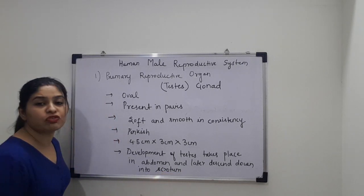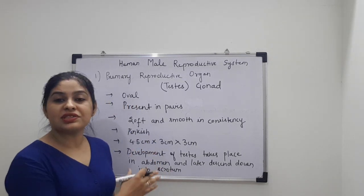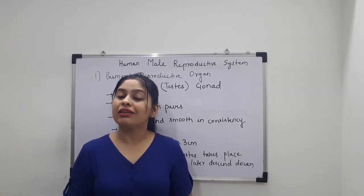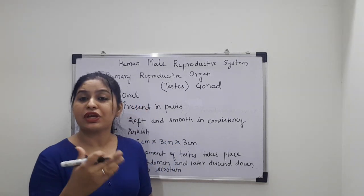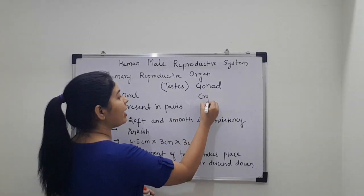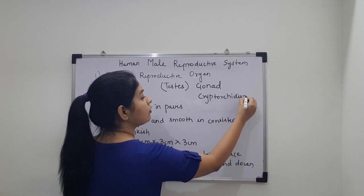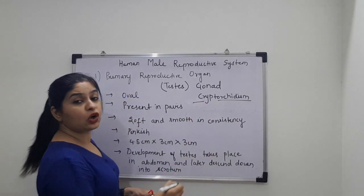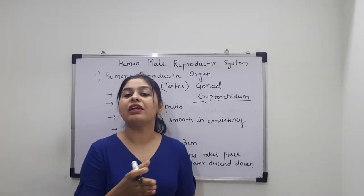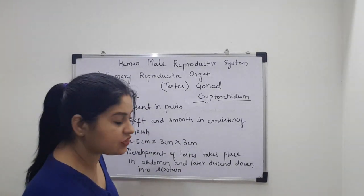The scrotum is a pouch of pigmented skin which is present extra-abdominally. In some children, either one or both testes fail to descend down into the scrotum — that condition is called cryptorchidism. Cryptorchidism is a disorder which is corrected by surgical intervention in the initial few months only.